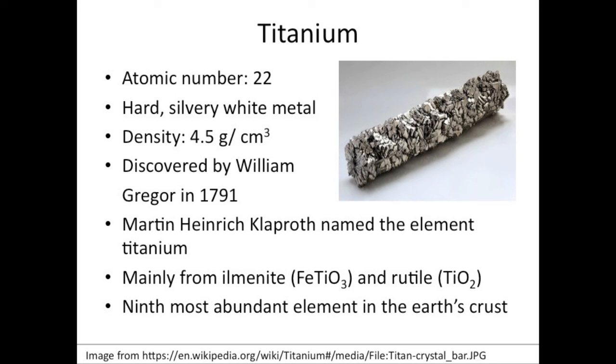It was discovered by William Gregor in 1791. He found a black material that is now called ilmenite and treated it with hydrochloric acid and sulfuric acid and obtained the residue of an impure oxide of what he then concluded was a new element. After four years,